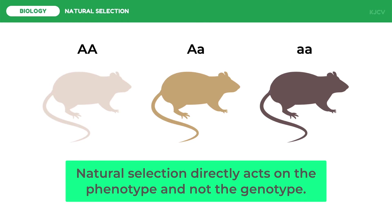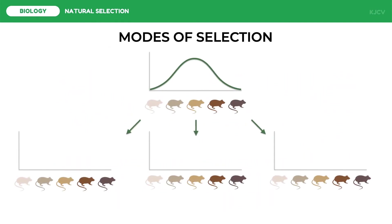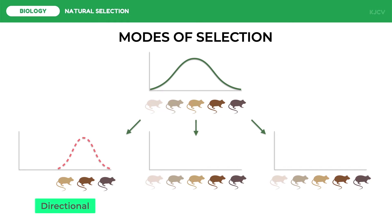Another important thing to note is that the environment naturally selects a phenotype using three modes. Suppose we have five phenotypes of mouse color. If the habitat of the mice is a dark rocky area, dark-colored mice can hide from predators, and light-colored mice are selected against. This is called directional selection, which happens when conditions favor individuals at one end of a phenotypic spectrum, moving the population's frequency curve in one direction.